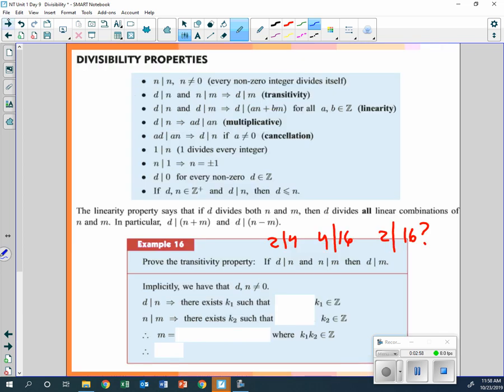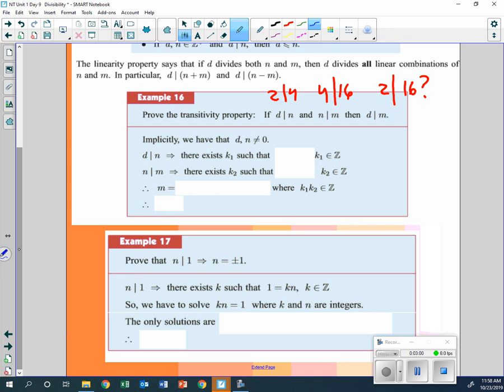So let's go to this one. Prove the transitivity: if d divides n and n divides m. So we're going to say d and n are not zero, because we don't want any of those to divide by zero. If d divides n, then all you have to do is rewrite that as n, the big, equals k1 times d, the small. Write that in.